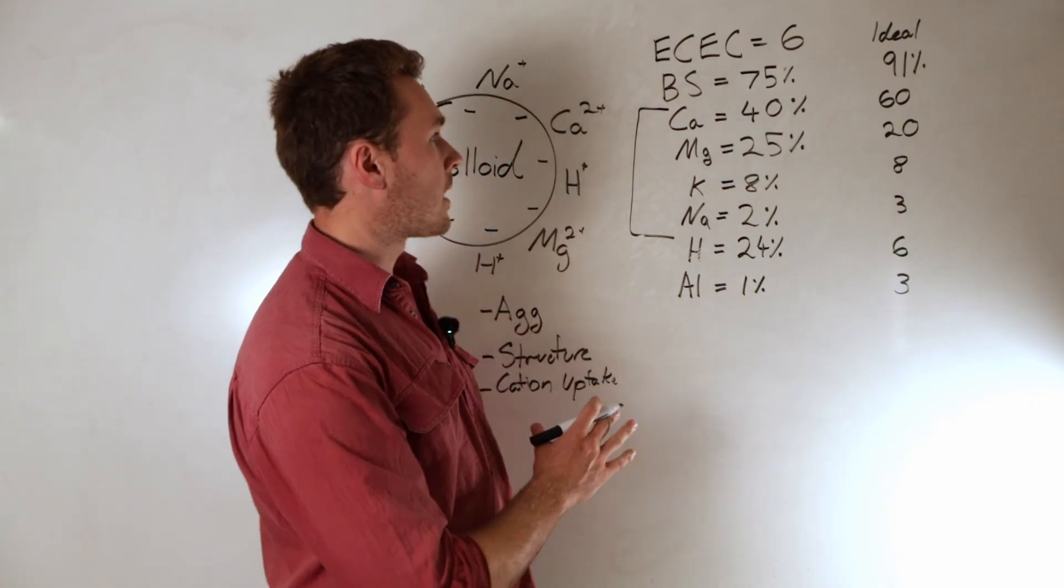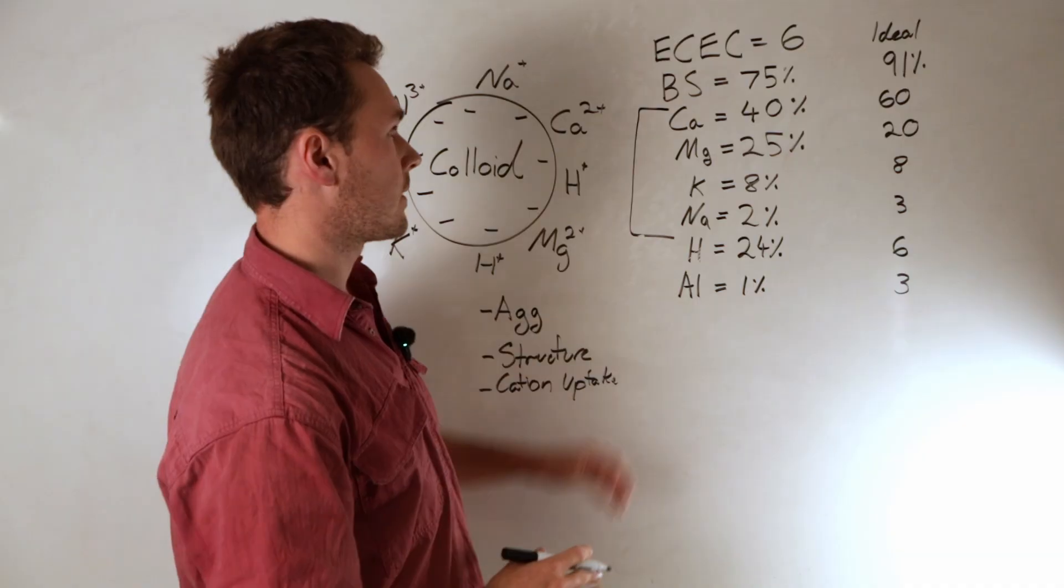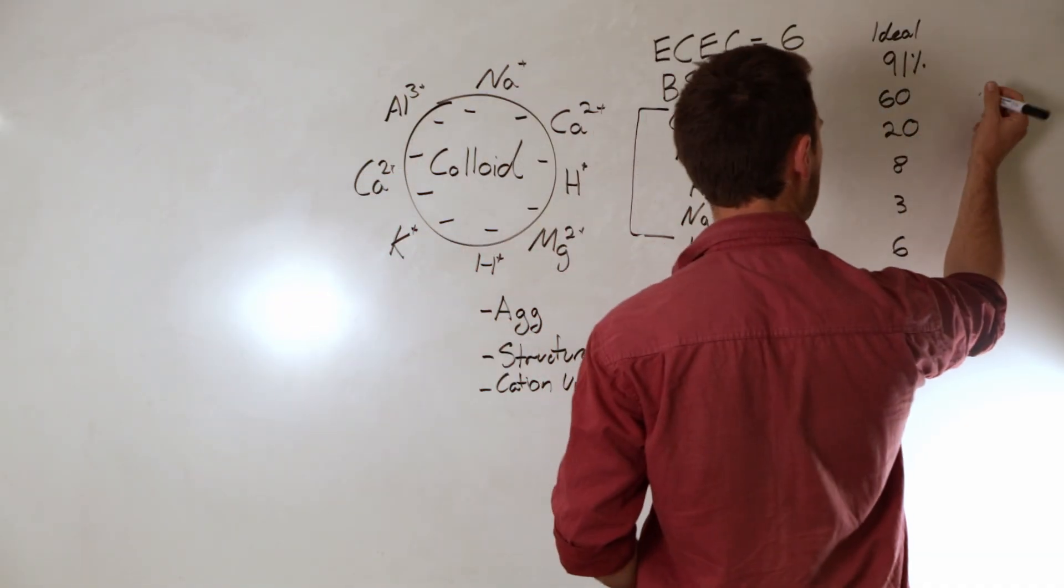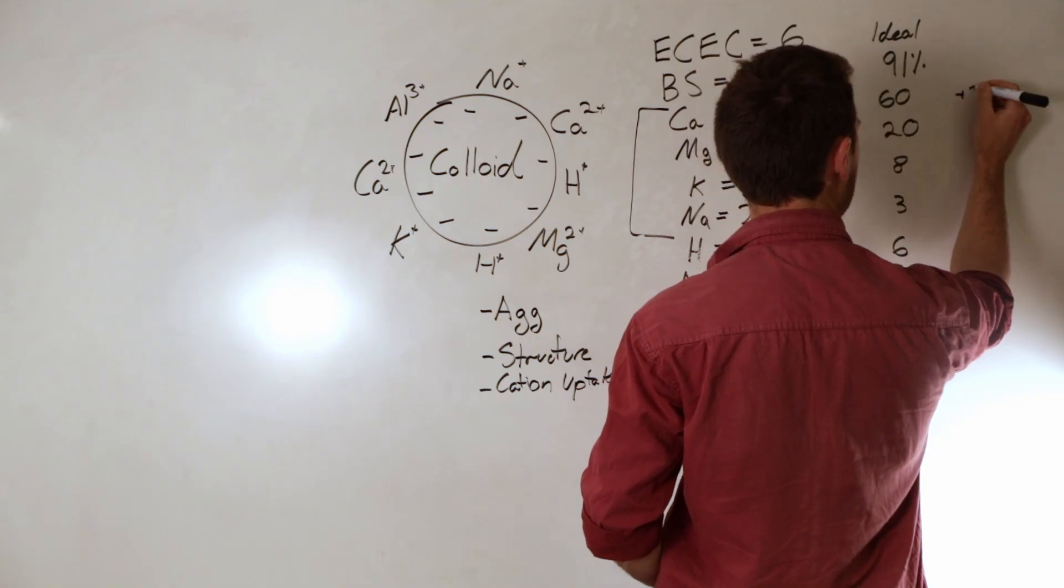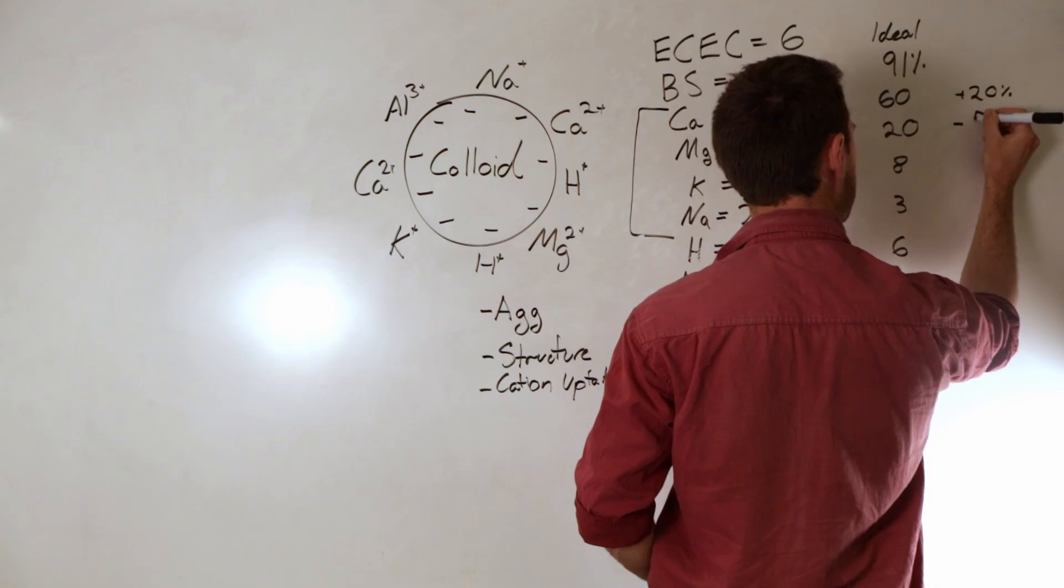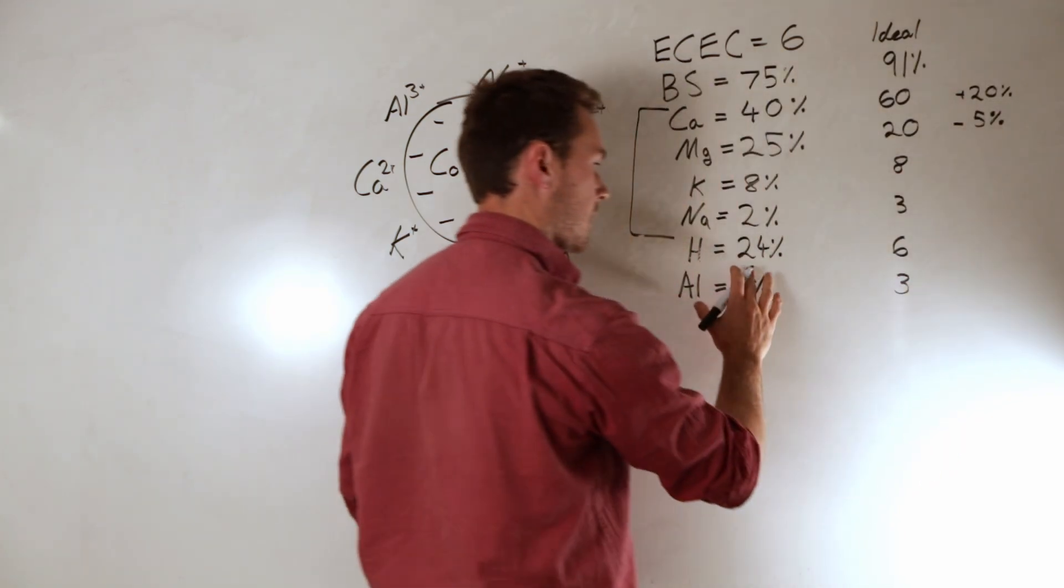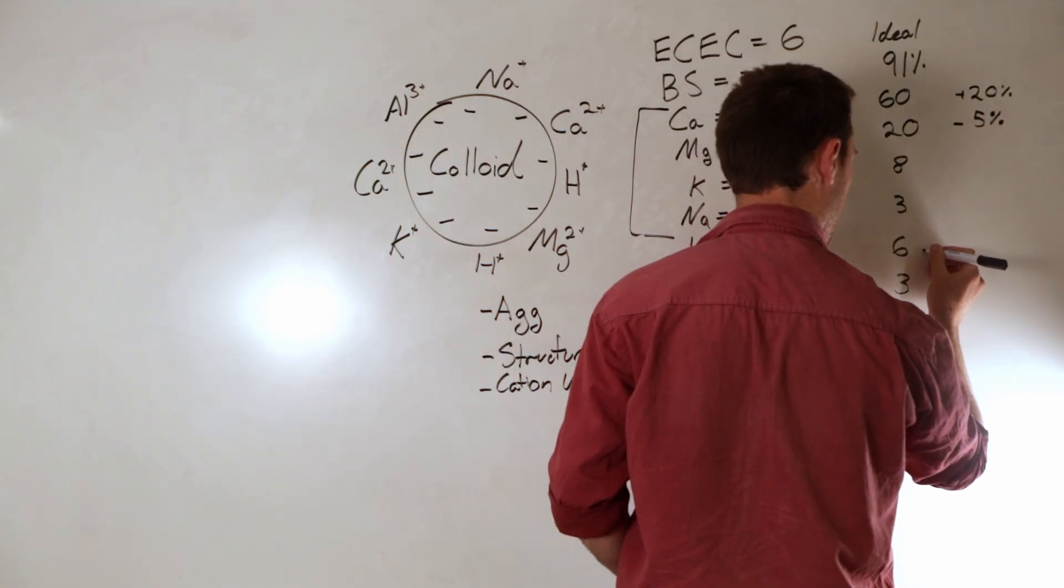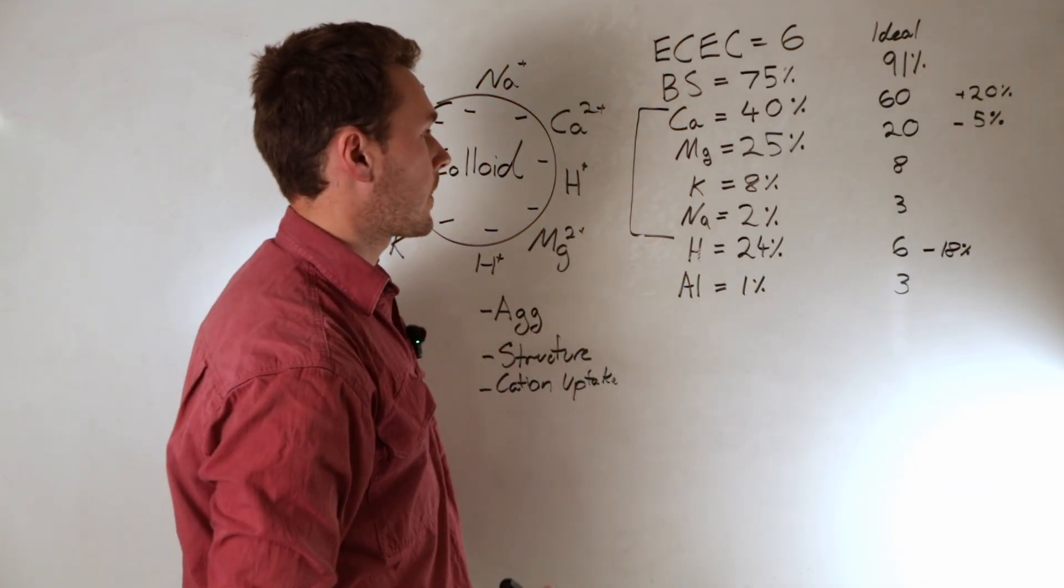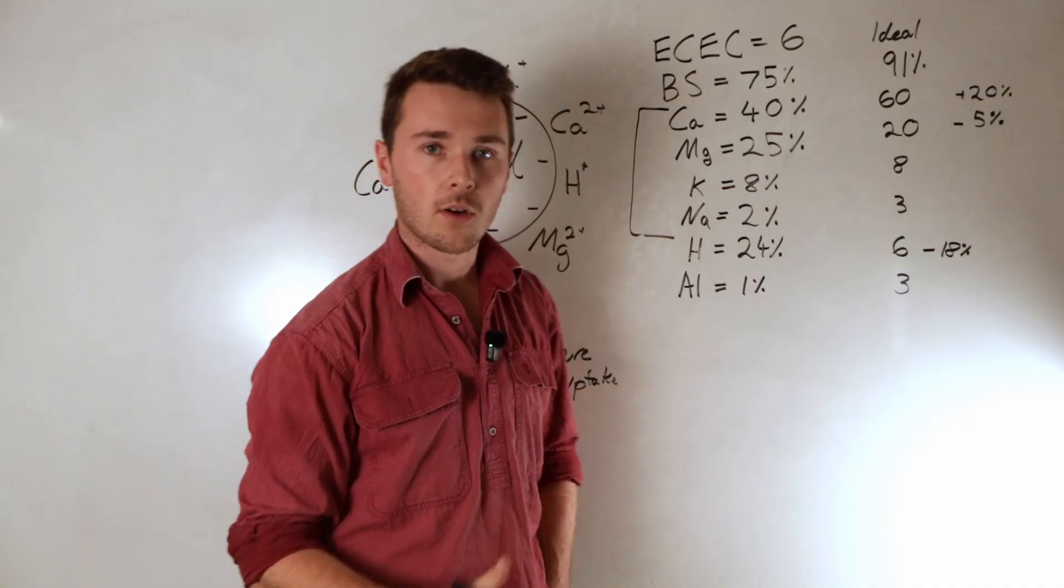So the first thing we want to do when balancing is to determine the difference in this. And so we want to add 20% calcium here. We want to remove 5% magnesium, and then for this one we effectively want to reduce the hydrogen by 18%. The way we can do that is with the substitution of these cations.